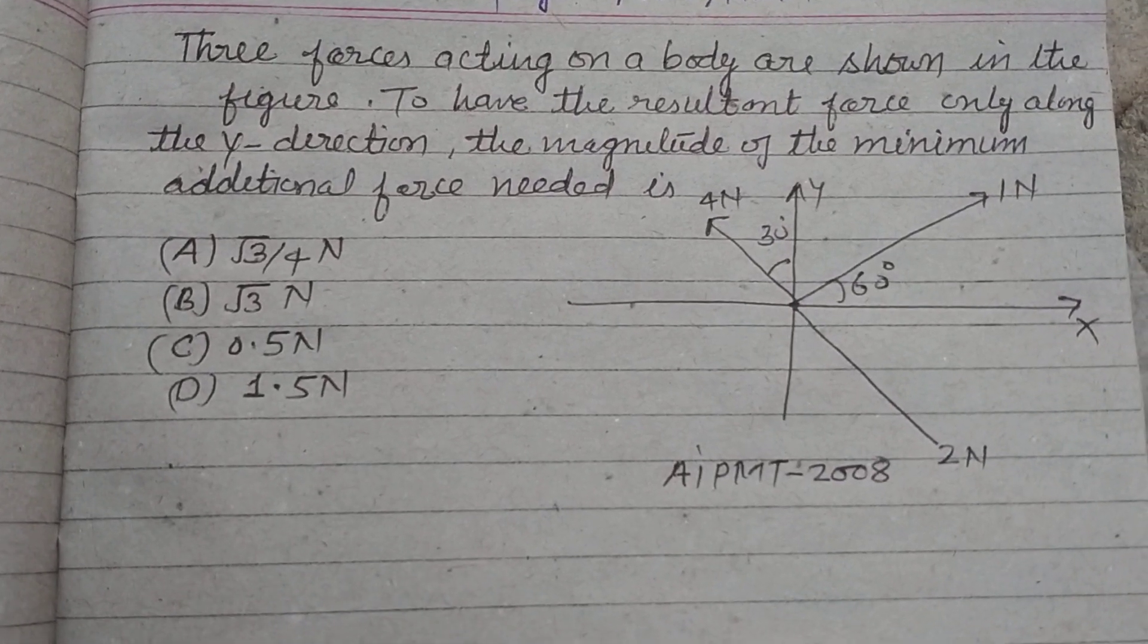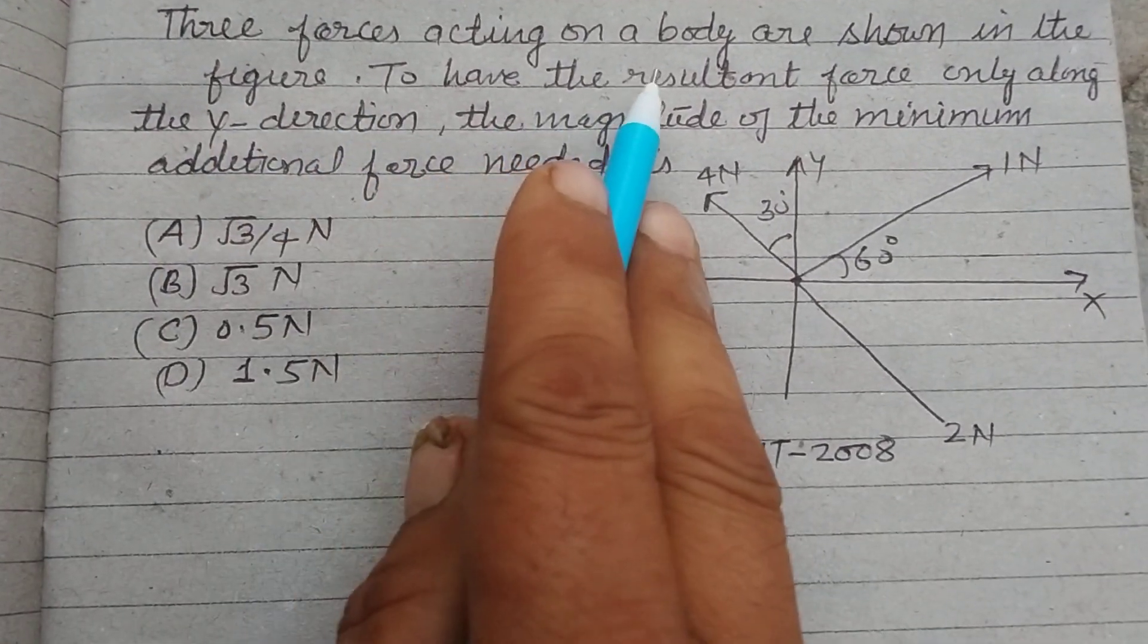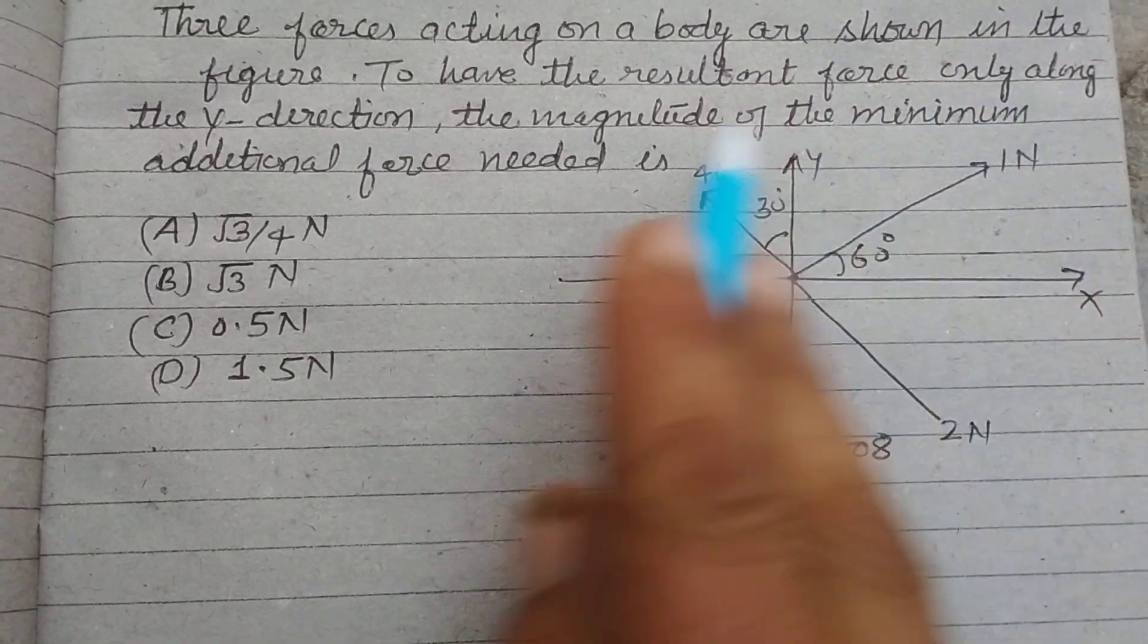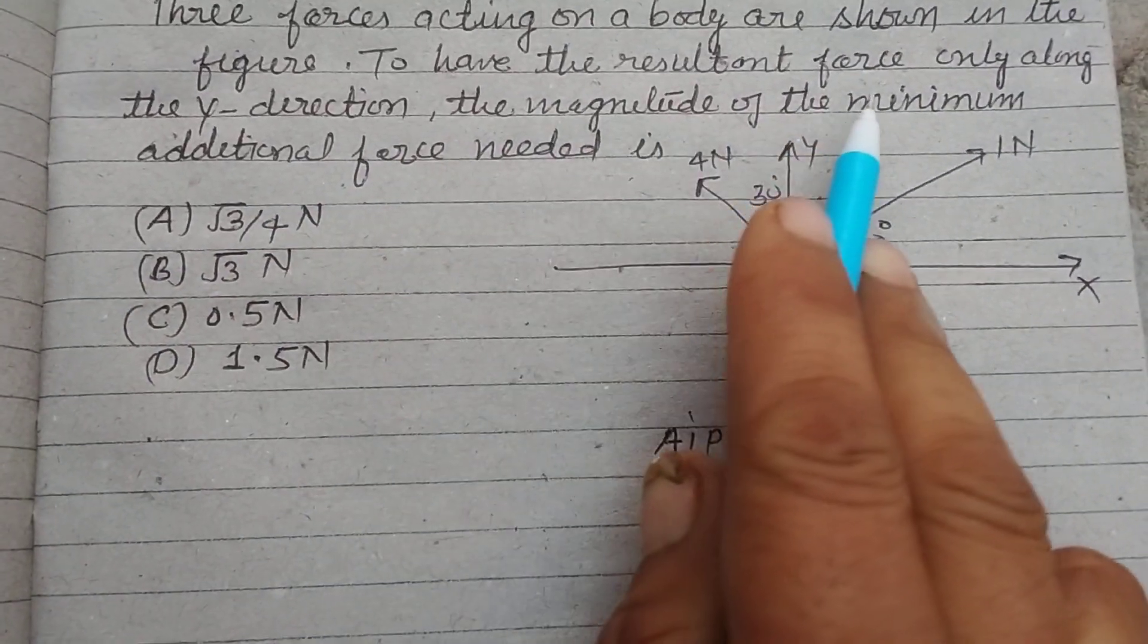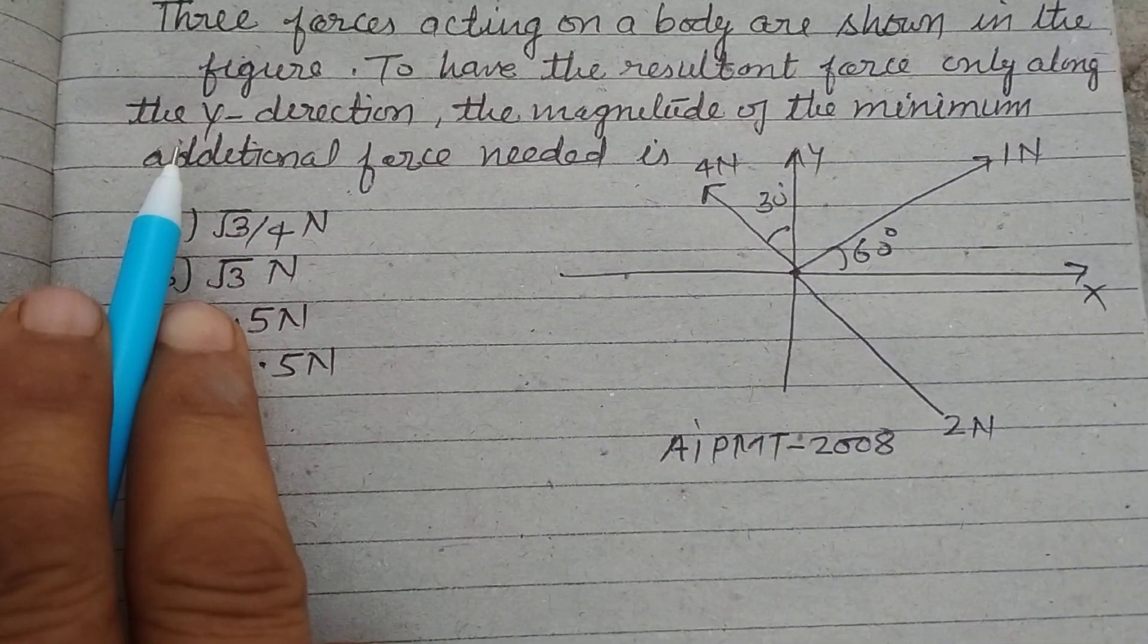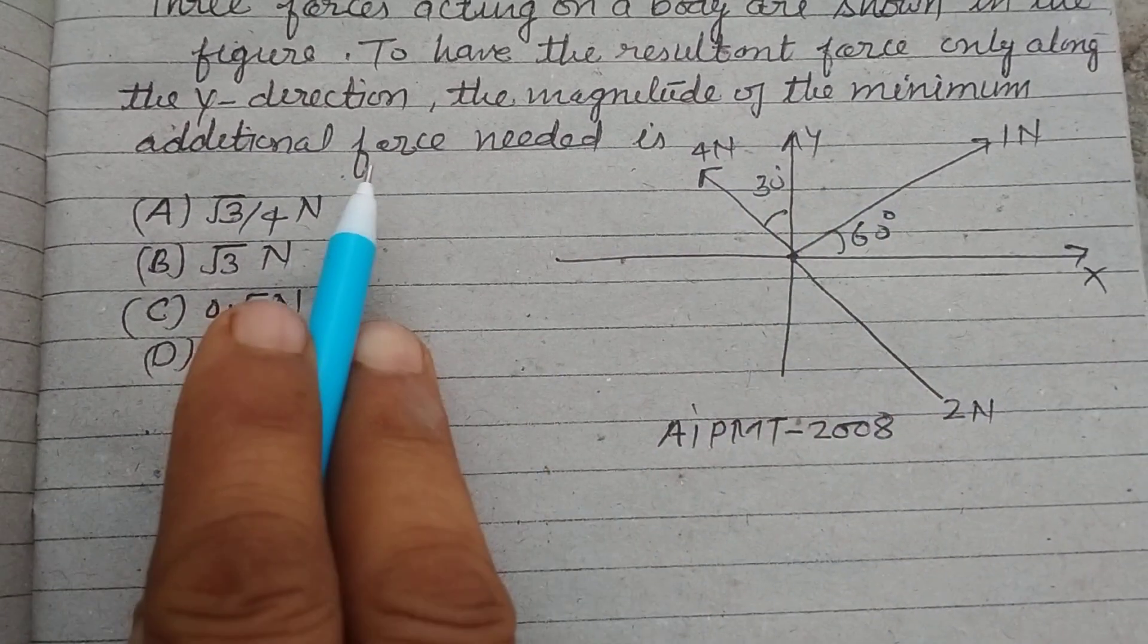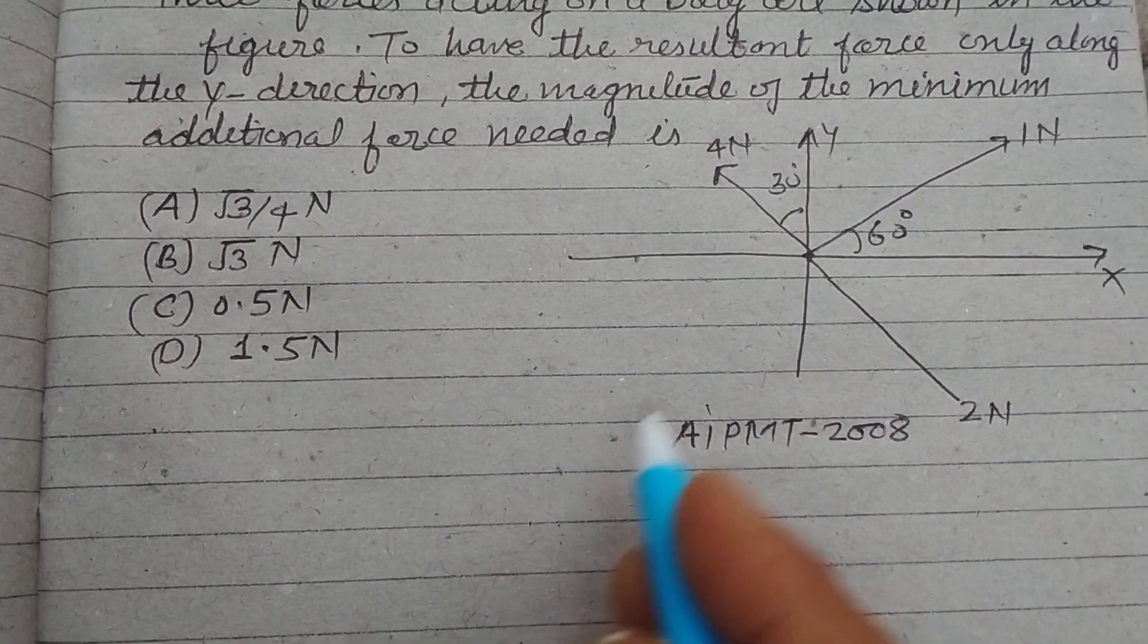Hello student, warm welcome to this YouTube channel. Three forces acting on a body are shown in the figure. To have the resultant force only along the Y direction, the magnitude of the minimum additional force needed is...